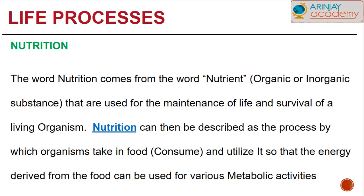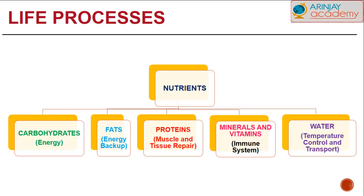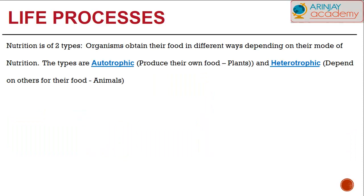Nutrition is derived from the word 'nutrient,' meaning organic or inorganic substance, used for the maintenance of life and survival of a living organism. Nutrition can be described as a process by which organisms take in food and utilize it so that the energy derived can be used for various metabolic activities. Types of nutrients required daily include carbohydrates for energy, fats as a store for backup energy, proteins for muscle and tissue repair, minerals and vitamins to help fight against diseases as part of our immune system, and water, which helps in temperature control and transport.